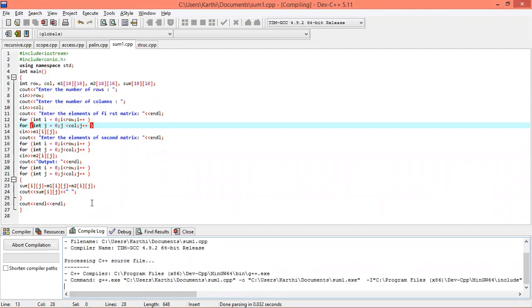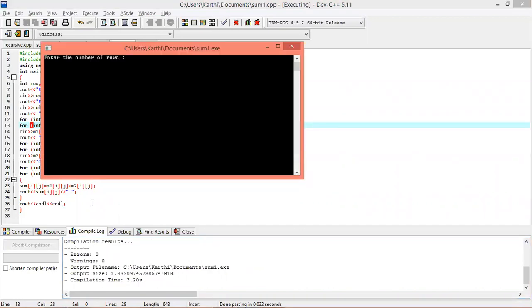We will execute. We will execute. Three rows and three columns, three rows and three columns. First matrix is nine elements. So one, two, three, four, five, six, seven, eight, nine. That is the second row. Now we will execute.